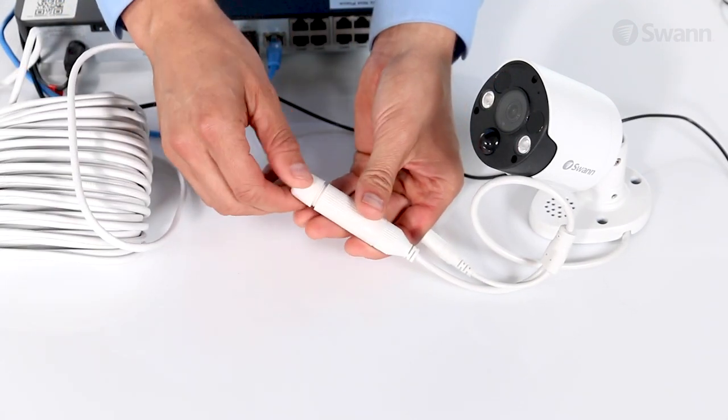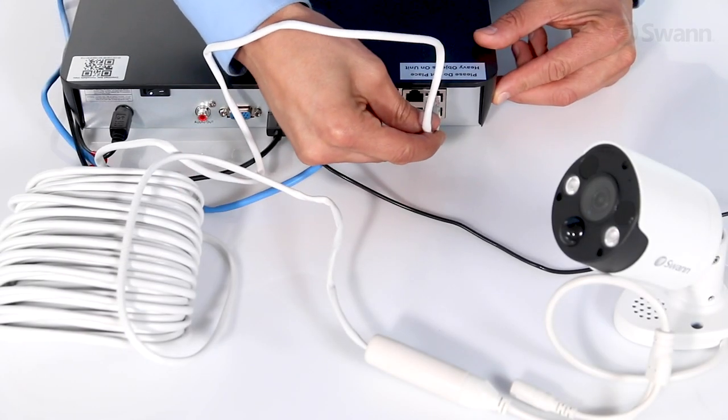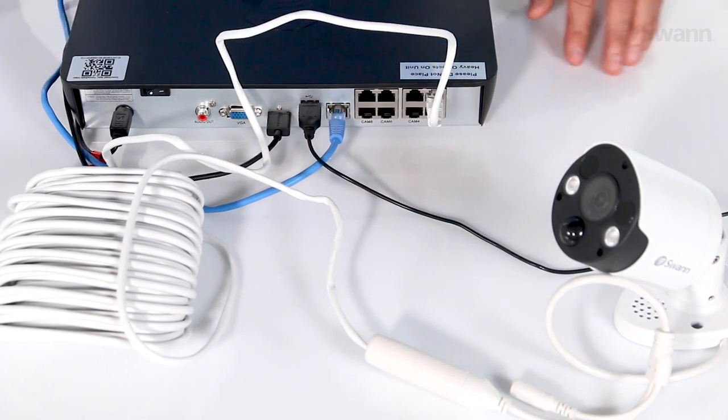Tighten the small barrel connector to complete the assembly. Then, plug the other end into a camera input on the rear of the NVR.